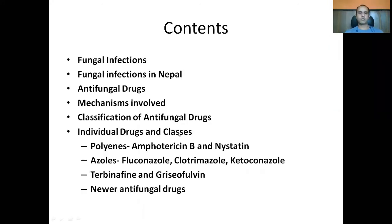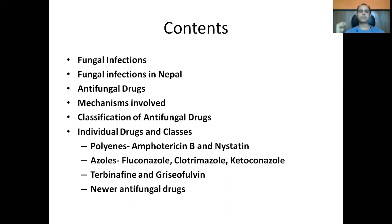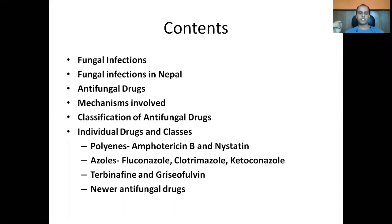Today we'll look at different fungal infections, including those prevalent in Nepal, the antifungal drugs, their classification mechanisms, and individual drug classes. Starting with polyenes — amphotericin B and nystatin — amphotericin B is one of the most toxic drugs known from the antibiotic class. Nystatin is even more toxic than amphotericin B, but it is only used topically, so its systemic toxicity is relatively low.